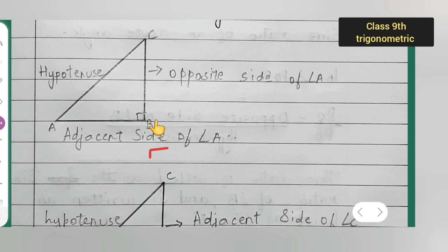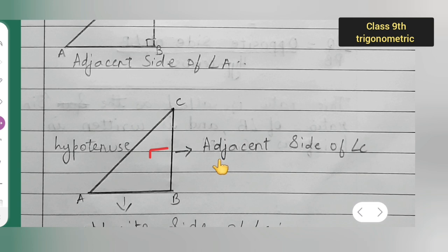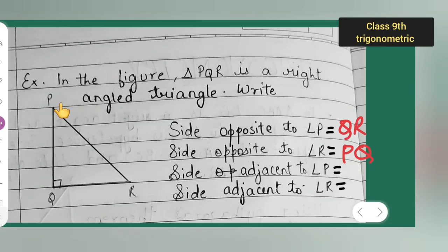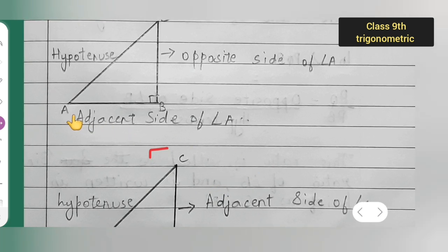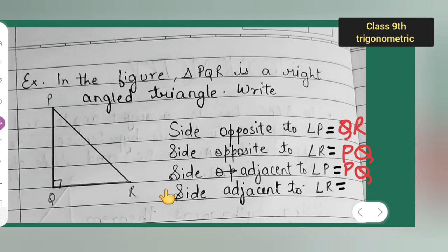For the side adjacent to angle P: just as the adjacent side of angle C was BC, here it will be PQ. For the side adjacent to angle R: just as adjacent side of angle A was AB, here it will be QR. You can check this by yourself and verify if it is correct.